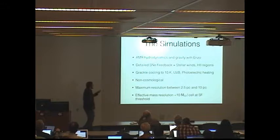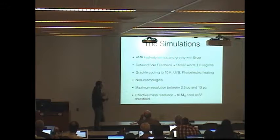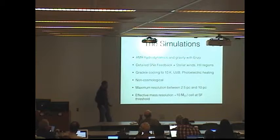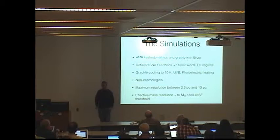Here's some more details for aficionados. It's important to note these are non-cosmological simulations, just isolated galaxy in a box. The resolution we get is between 2.5 and 10 parsecs. And for the 10 parsec number, if you're used to thinking in SPH terms, this corresponds to an effective mass resolution of about 10 solar mass per cell at the star-forming threshold.